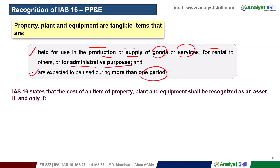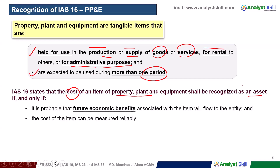When we talk about property and equipment, what I recognize as an asset depends on two conditions. First, the future economic benefit associated with the item will flow to the entity. Second, when I acquired the asset, the cost was reliably measured. When both conditions are met, the asset will be recognized.